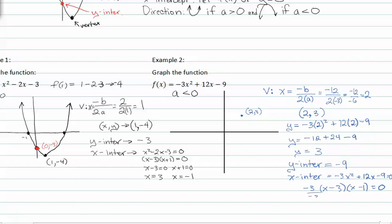Dividing my -3 out, I get x - 3 equals zero and x - 1 equals zero, setting my factors equal to zero. So x is equal to 3 and x is equal to 1. So 3 and 1 are my two x-intercepts.